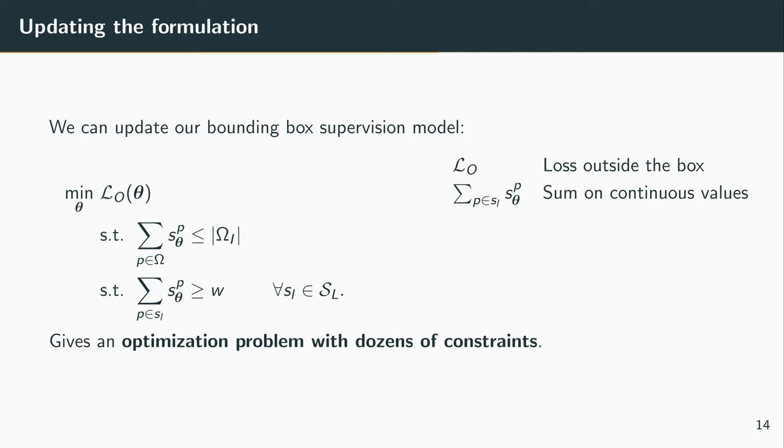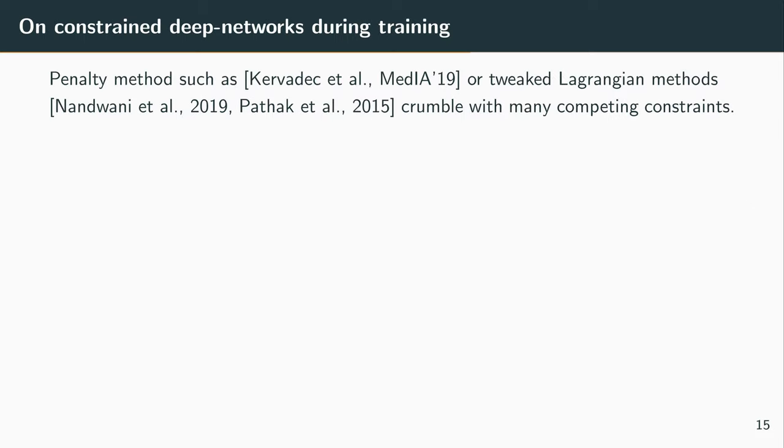So this formulation would work in theory. It has all the information that it needs for the network to learn how to segment an object. But we cannot do that directly. We end up with an optimization problem with dozens of constraints to satisfy, which are actually in competition.